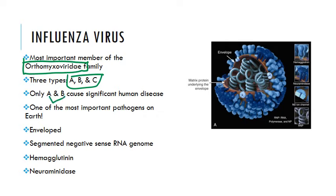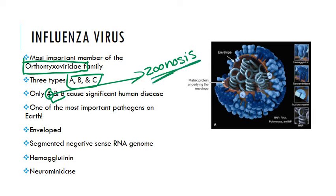Only A and B actually cause significant disease in humans. Only influenza A is a zoonosis — able to infect other animals — and that's really important because it's able to change the genome of influenza A, which changes how we respond to it. The fact that it's a zoonosis is actually what leads to some of those pandemics.